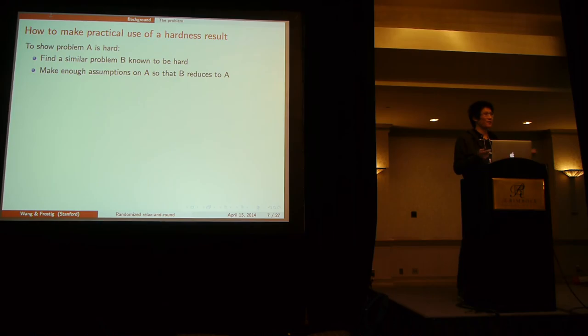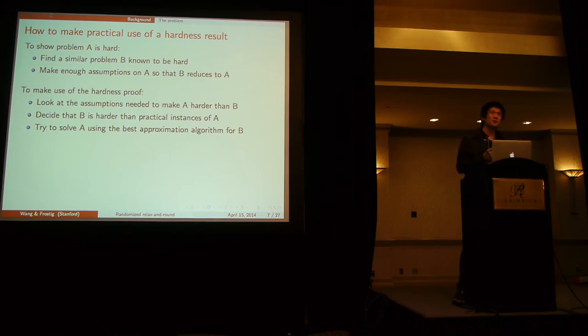So how do you show the hardness of a problem like inference? You find a similar problem that's well-known, well-studied, and you reduce it to inference. But if in the process of doing this you need to make a lot of unrealistic assumptions on the characteristics of the inference problem, it probably means that problem B that you are reducing to inference A is actually in general harder than A, and you can look at the best approximation algorithm to solve B and try to use it to solve A. So very realistic reasoning.